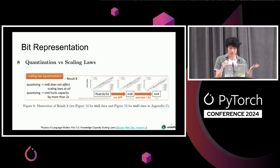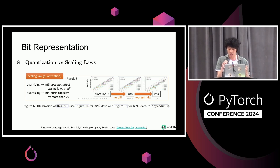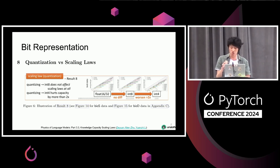There's a physics paper called 'Physics of LLMs Part 3.3,' I think from the Meta team, which shows that if you do quantization down to int8, you don't lose any accuracy. But if you go to int4, you actually lose two times the knowledge capacity. The trick is you have to add LoRA and QLoRA — so when you fine-tune using int4, you can then recover all the accuracy.